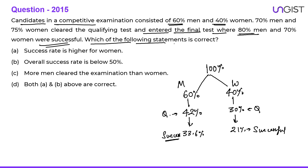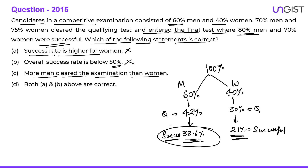Which of the following statements is correct? 'Success rate is higher for women' — women is 21 percent and men is 33.6 percent, so this is not correct. 'Overall success rate is below 50 percent' — 33.6 plus 21 is 54.6, which is more than 50 percent, so this is also not correct. 'More men cleared the examination than women' — yes, that is correct. C is the correct answer. Simple question based on common sense.